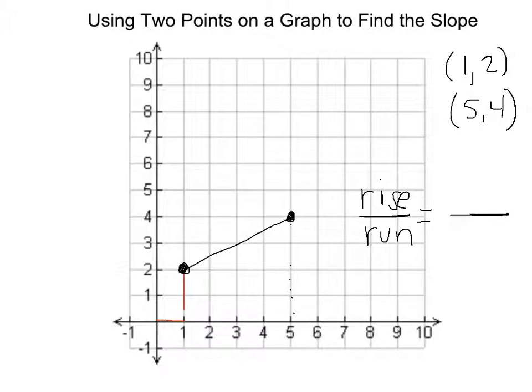If we go up 1, 2, our rise is 2. We go over 1, 2, 3, 4. Our run is 4.